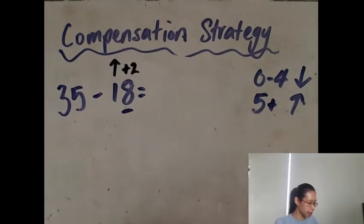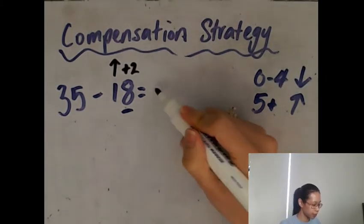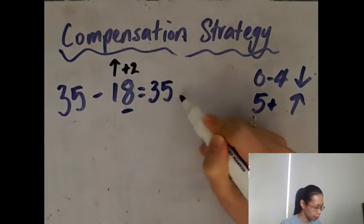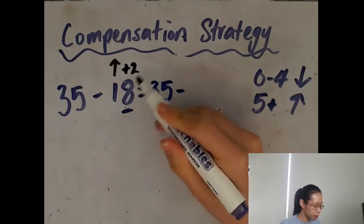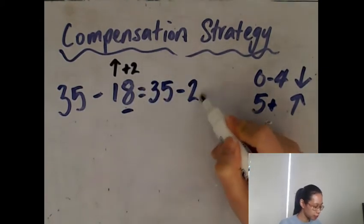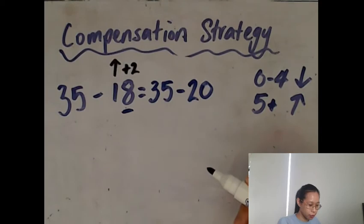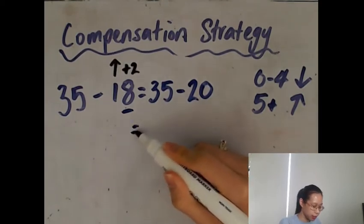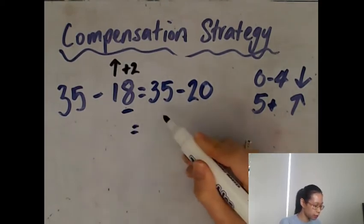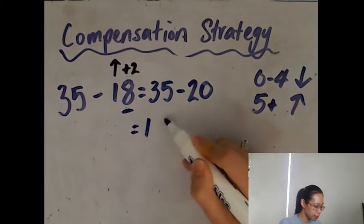I'm going to rewrite this number sentence as 35 minus, so if I round up then it will be 20. So 35 minus 20 is 15.